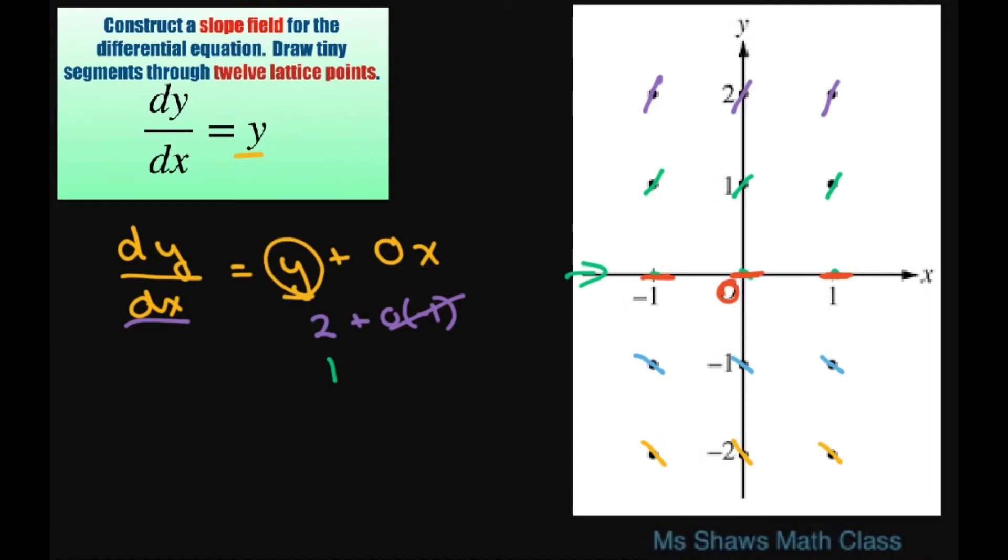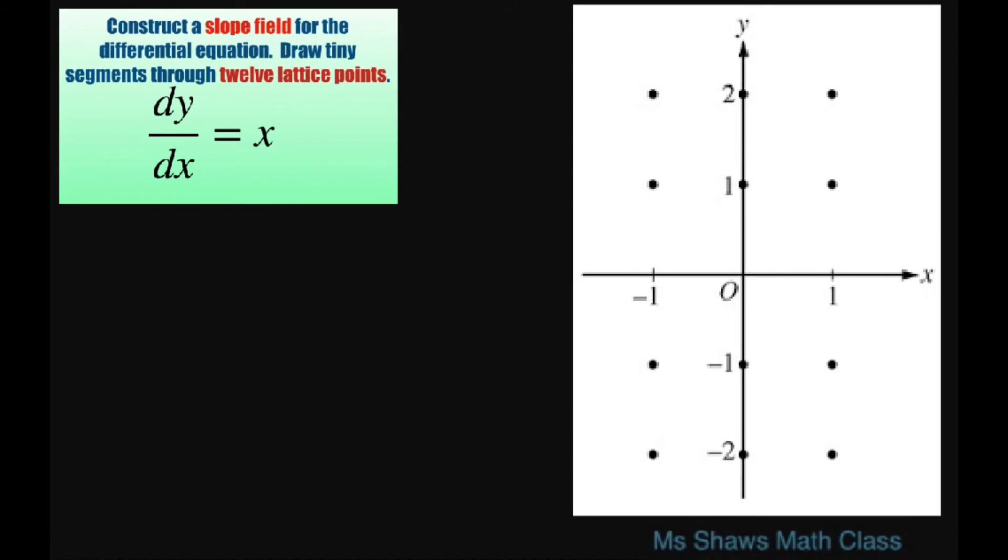Now I did another one. So again, these are pretty easy, but sometimes the easy ones are confusing. So basically for this, it just means whatever your x is. So if you look at your x here, it's negative 1.